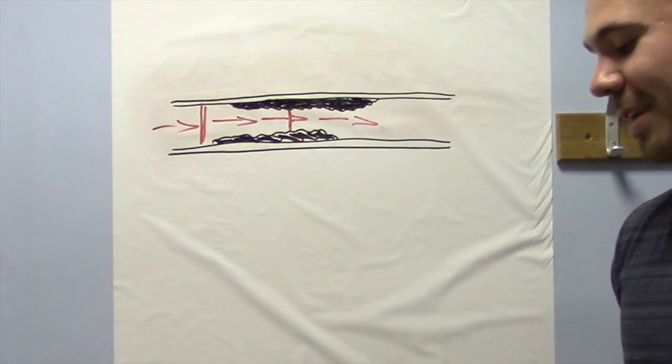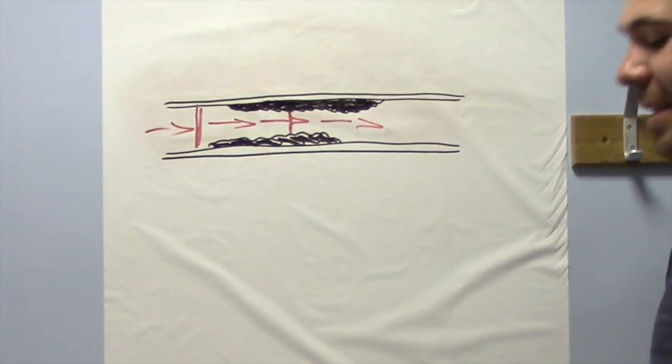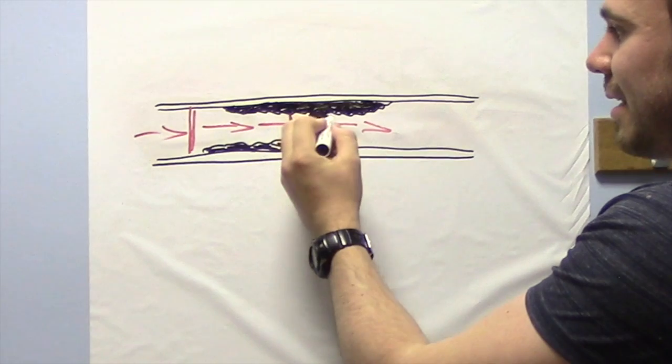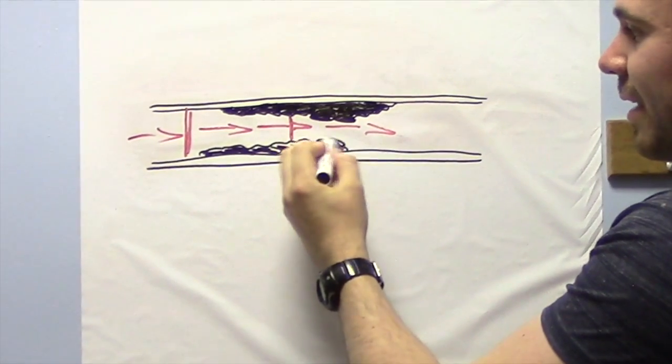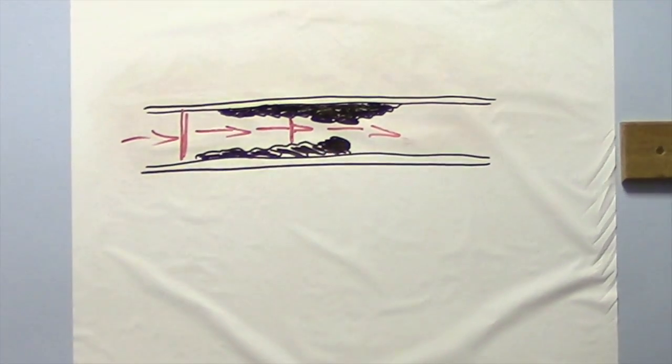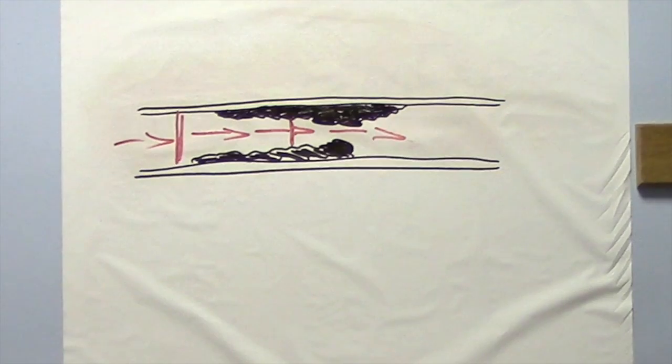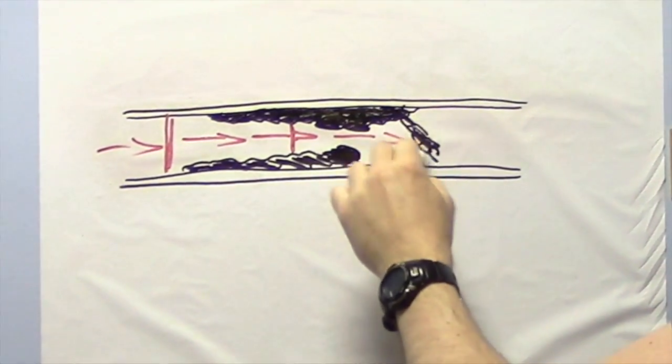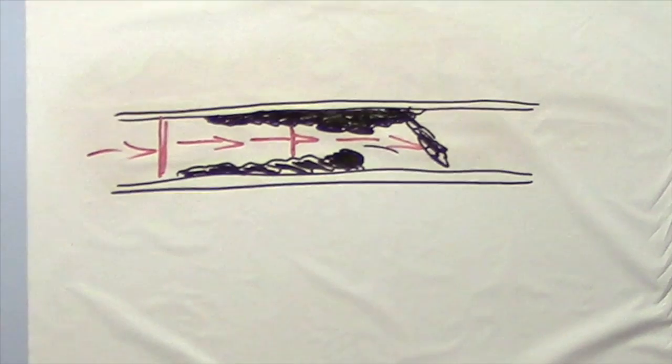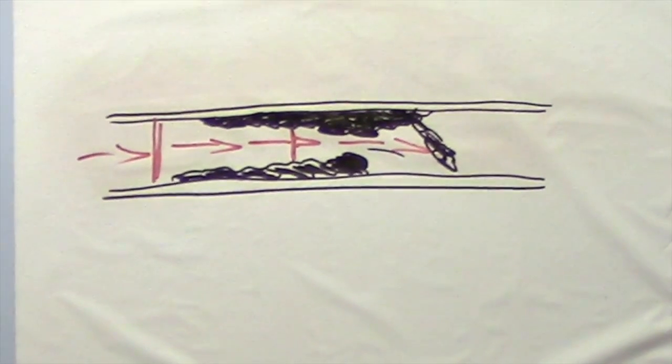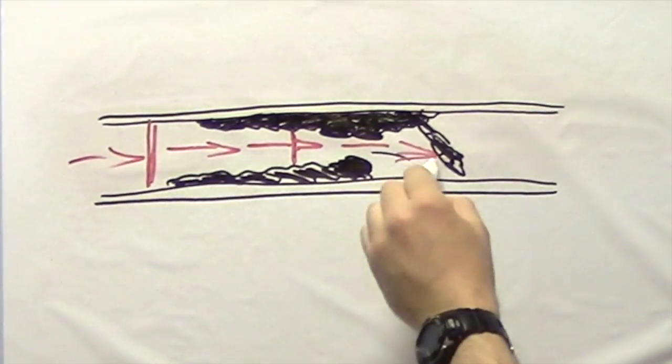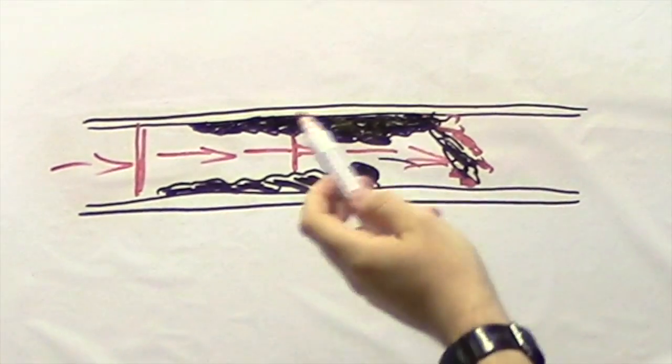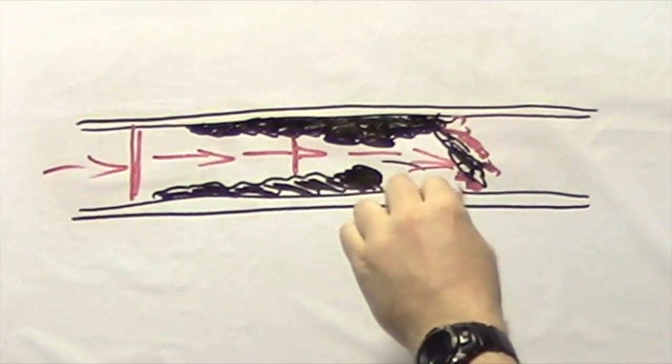And over time, what can happen is these plaques can either get too big, that they basically just completely restrict the blood flow through the arteries, or pieces of them can break and come off and again restrict the blood flow. And what happens then is red blood cells will start to form clots around the cholesterol that's broken off.